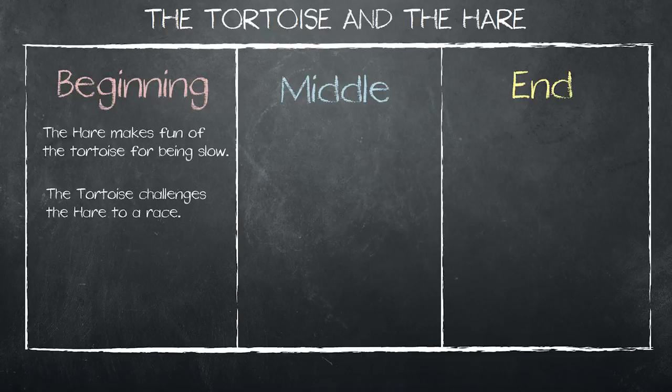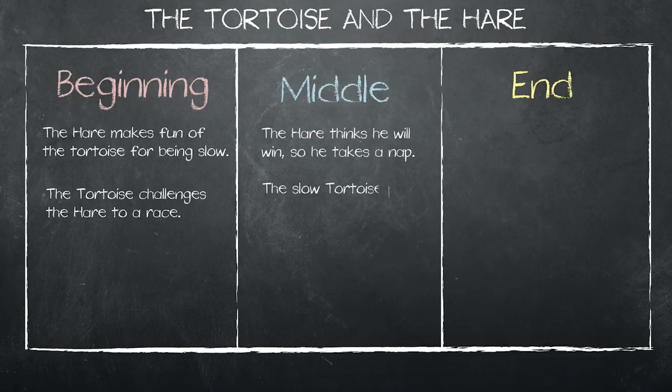Then ask the students what happened in the middle of the story and write their answer in the middle box. The hare thinks he'll win, so he takes a nap. The slow tortoise passes the hare. The hare wakes up and he's behind.